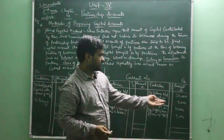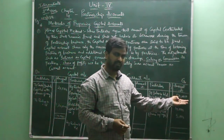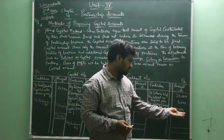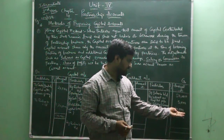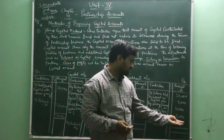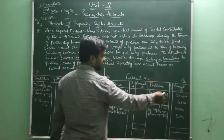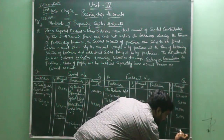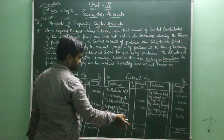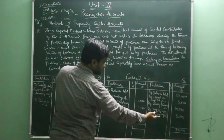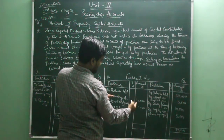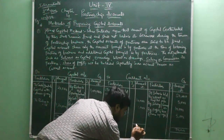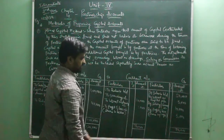Now, how do we do this balancing? If the partner has invested rupees 50,000, then interest on capital of 5,000 gives a balance of 55,000. Adding salary or commission of 10,000 gives 65,000. Adding a profit share of 5,000 gives 70,000. He has withdrawn 10,000, leaving 60,000, and after deducting interest on drawings of 1,000, the remaining capital balance is rupees 59,000.